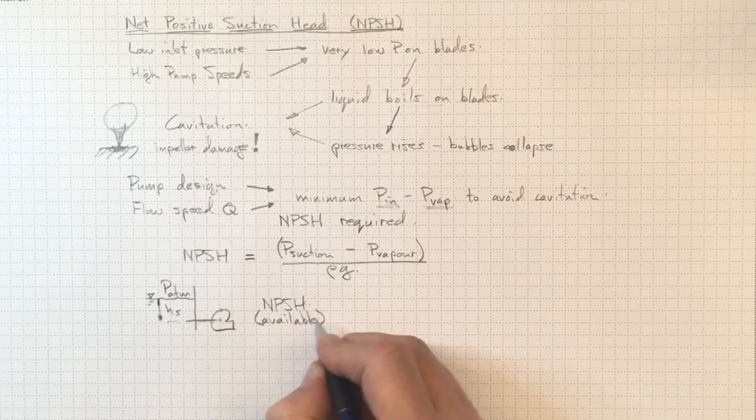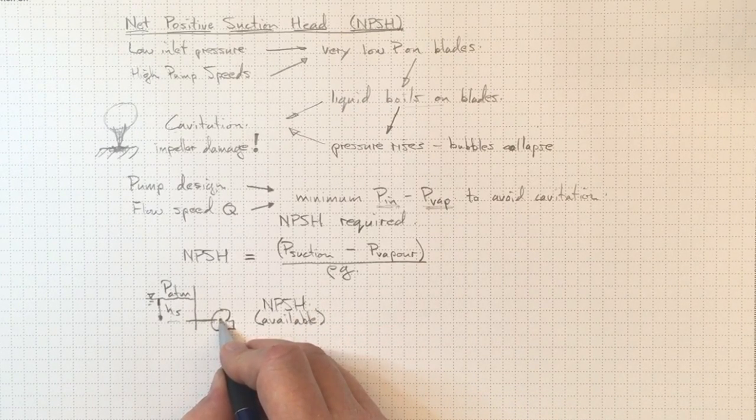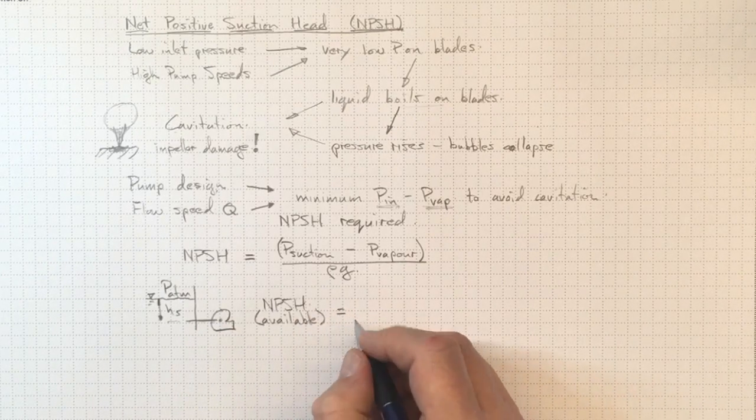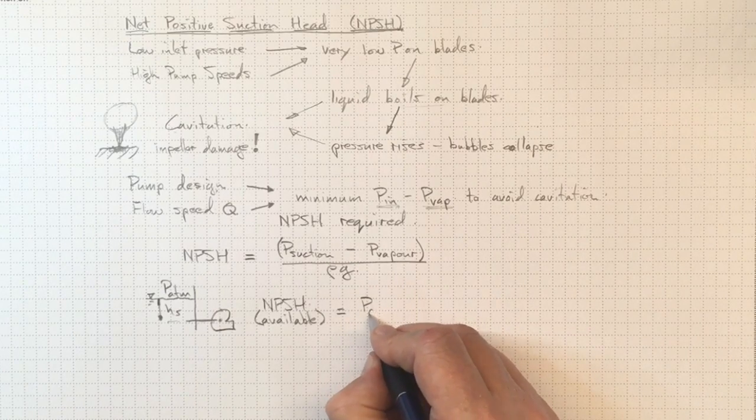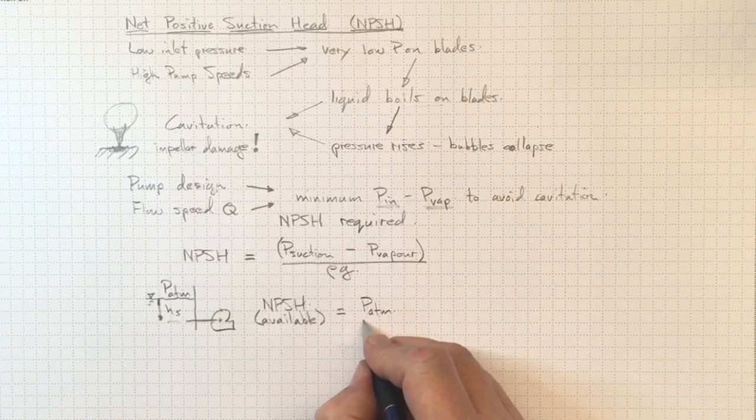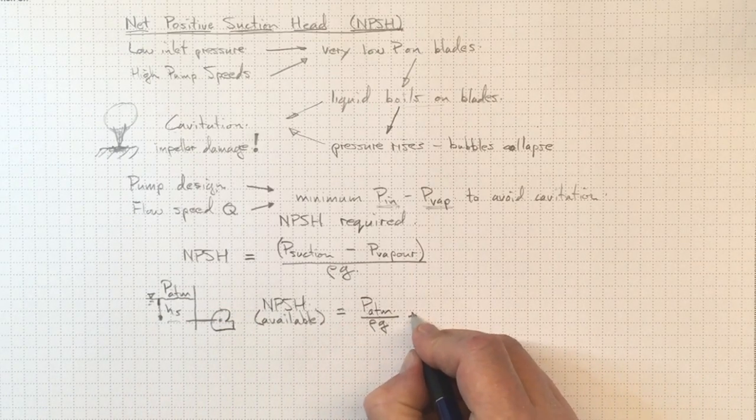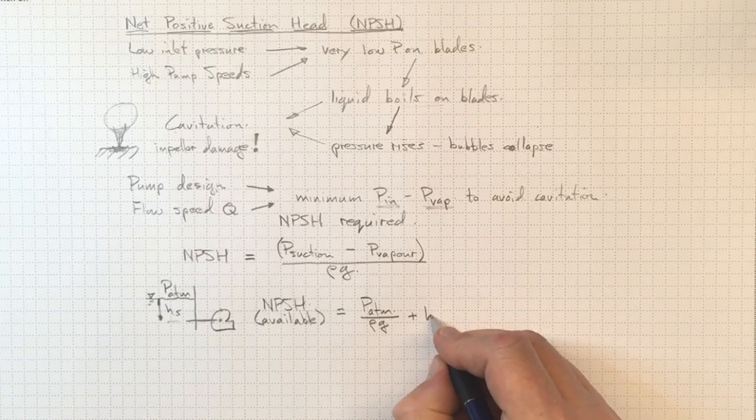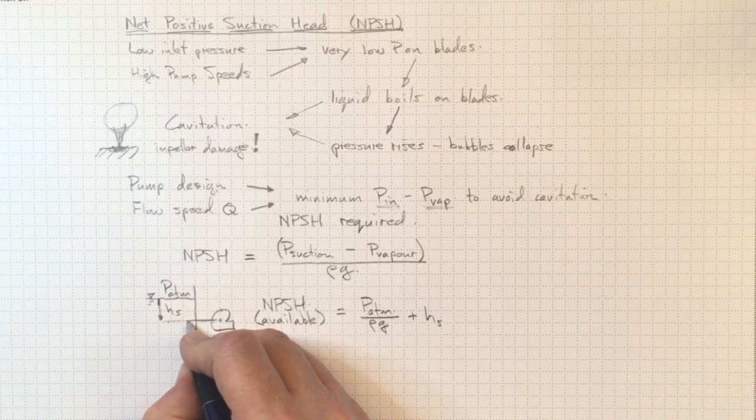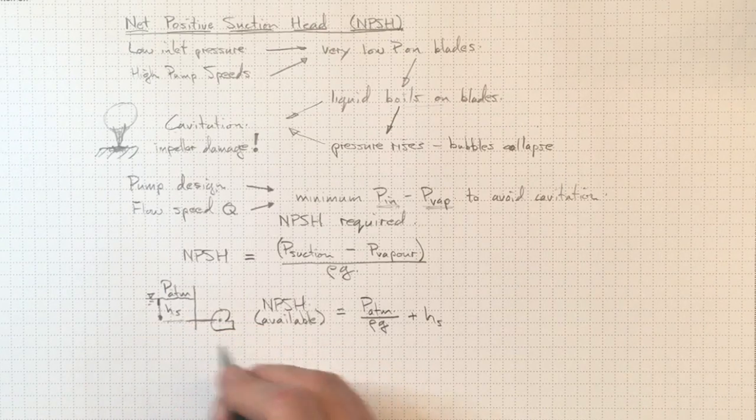That is the actual NPSH that we'll have at the suction of the pump. In this case, it'll be atmospheric pressure divided by rho g. That's what we had here. It'll go up by HS. So the pressure's higher down here. We've got more head down here.